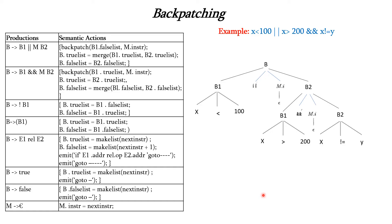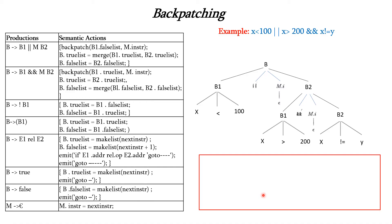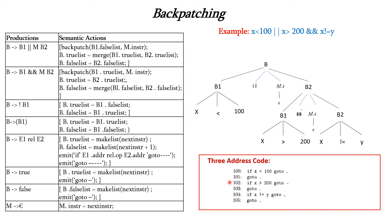Now let us see the three-address code generated before backpatching. We check the relational expressions at addresses 100, 101, 102, etc. The first two lines are for x < 100, the next two for x > 200, and the last two for x ≠ y. Since we do not know the branch targets at this point, we generate empty targets. After applying the backpatching technique, the target labels will be filled in.